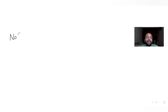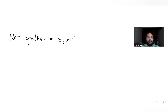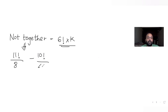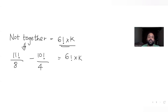So the number of ways in which C and S are not together is total minus opposite idea. That gives 11 factorial upon 8 minus 10 factorial upon 4, and this is equated with 6 factorial into K. To find K more easily, I will convert all factorials in terms of 6 factorial.